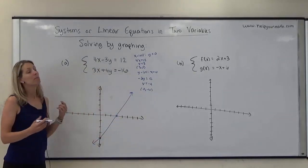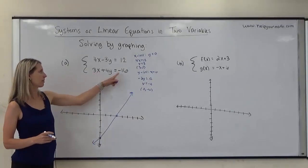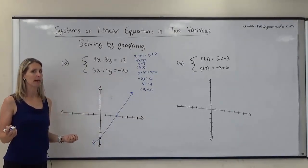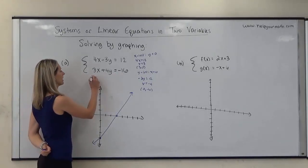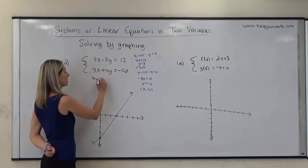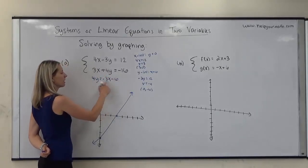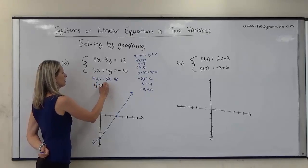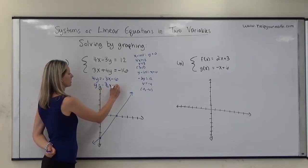For the second equation, I'm not going to use the intercepts because I know I'll end up with a fraction for my x-intercept, so instead I'm going to rewrite this one in slope-intercept form. I'll take away 3x from both sides, leaving 4y equals negative 3x minus 16, then divide everything by 4, giving y equals negative 3-fourths x minus 4.